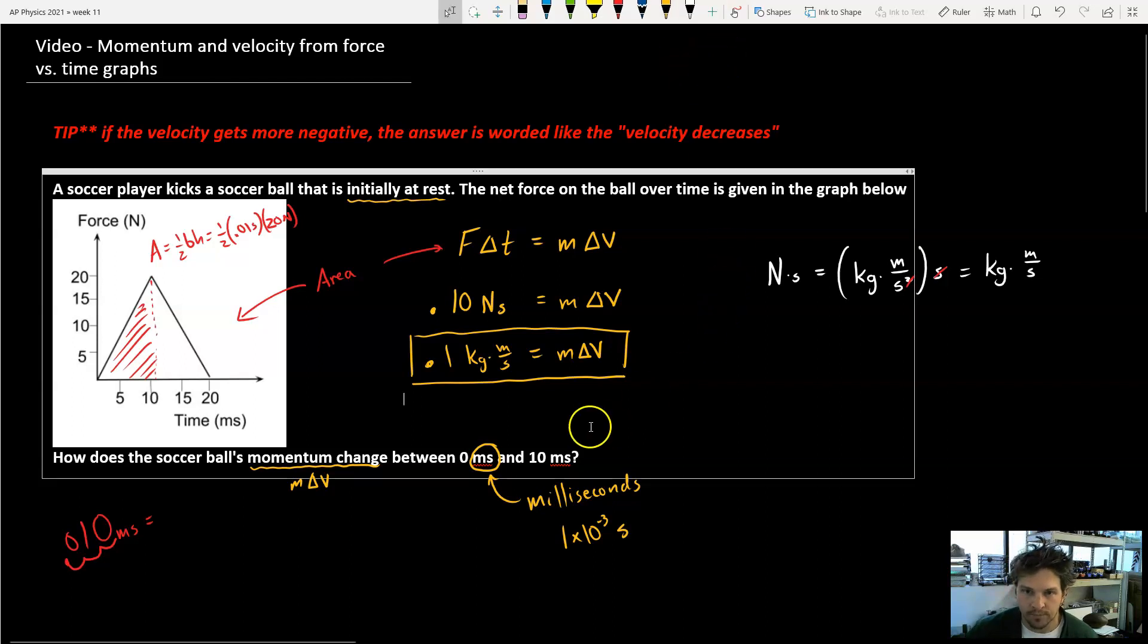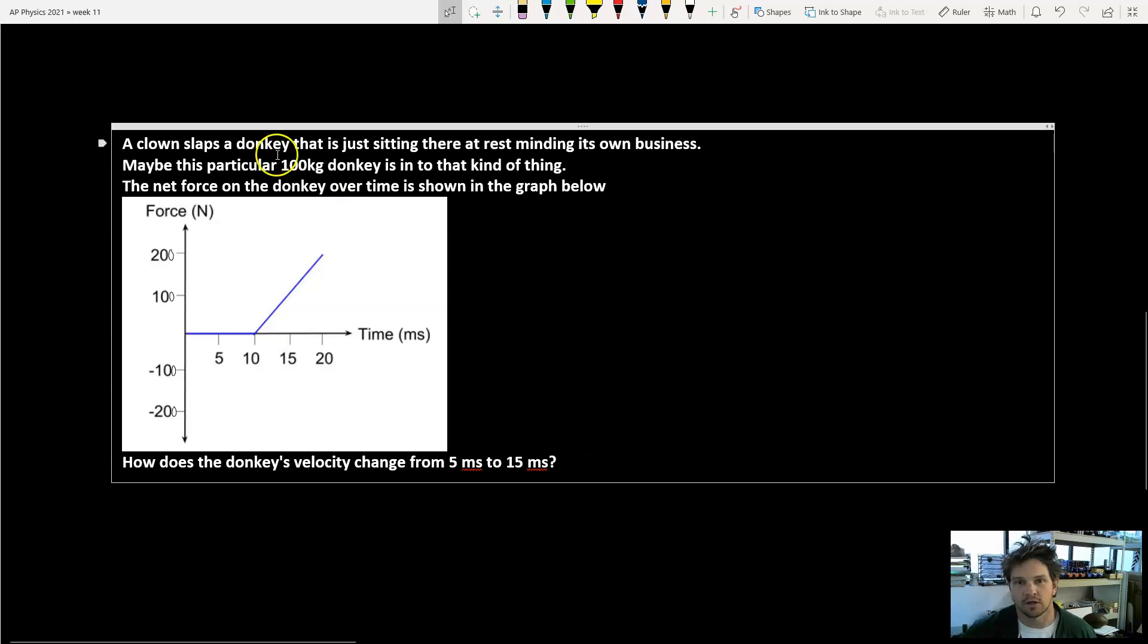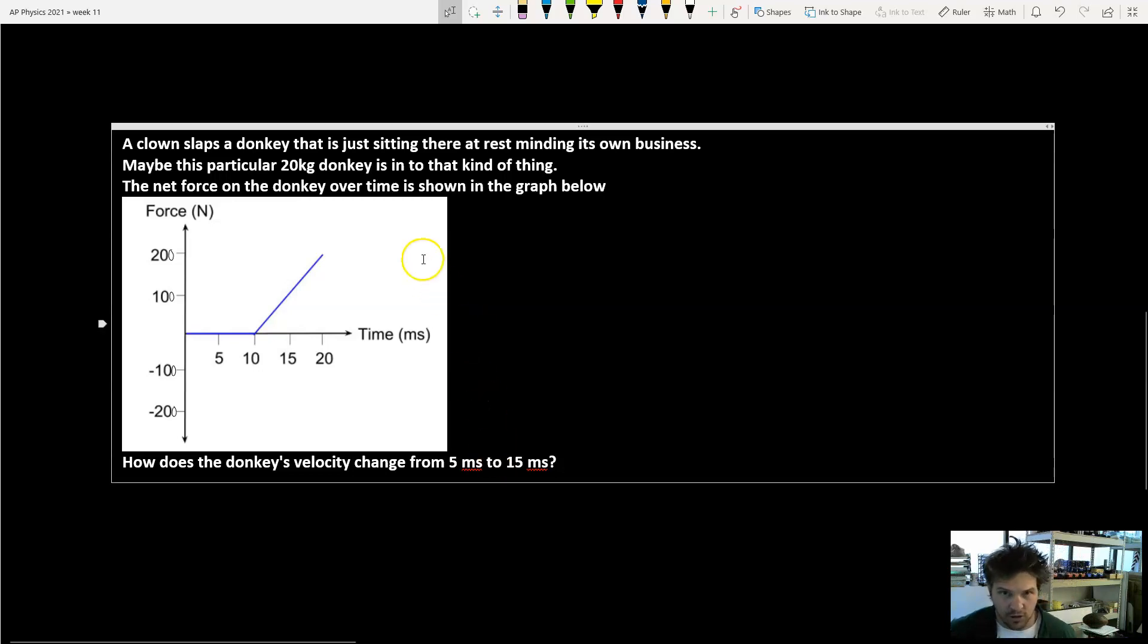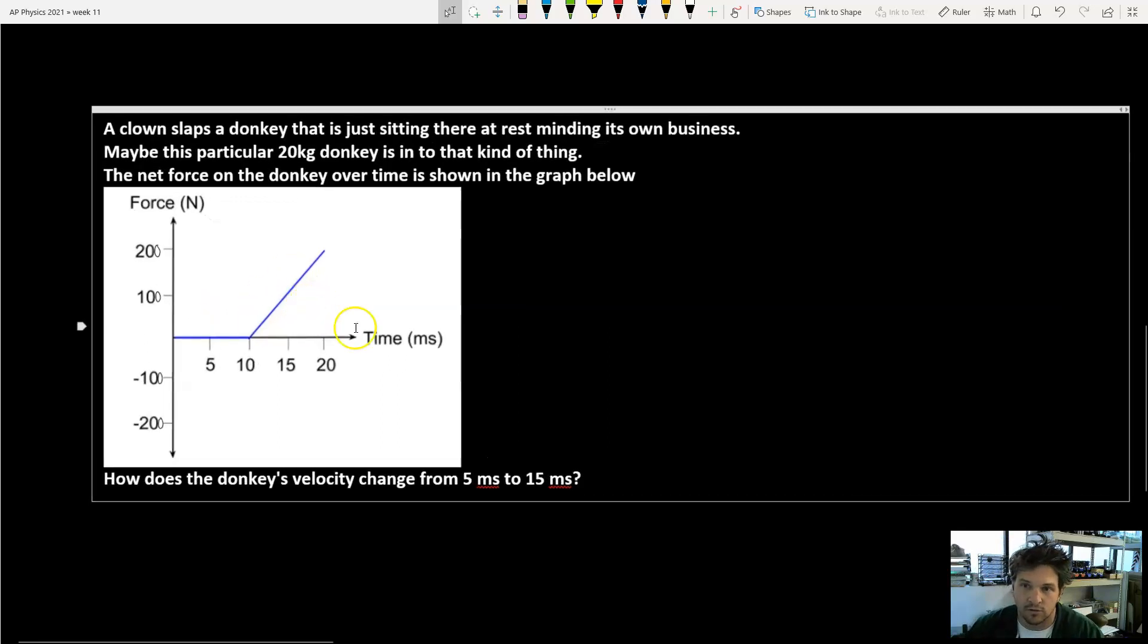Let's take a look at one more slightly different thing. In this problem, we've got a little bit different situation. A clown slaps a donkey that's just sitting there minding its own business at rest. Maybe this particular donkey is into that kind of thing. And that statement is mainly there just to let us know the donkey has a mass of 20 kilograms. We have a net force versus time graph given to us right here. How does the donkey's velocity change from five milliseconds to 15 milliseconds? So for this one specific part on the graph, I'm going to zoom in just a little bit.